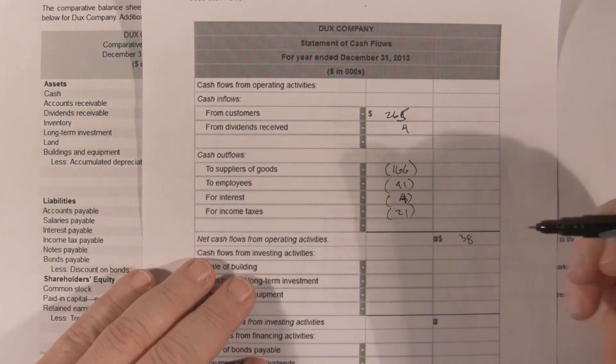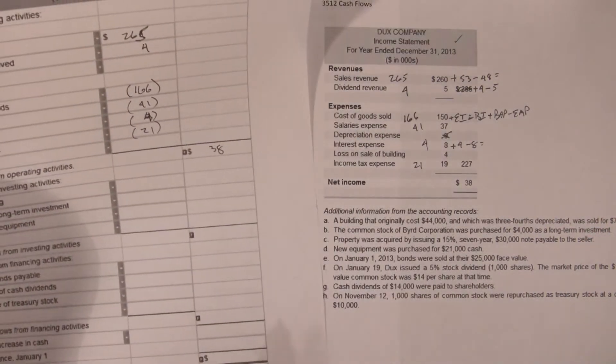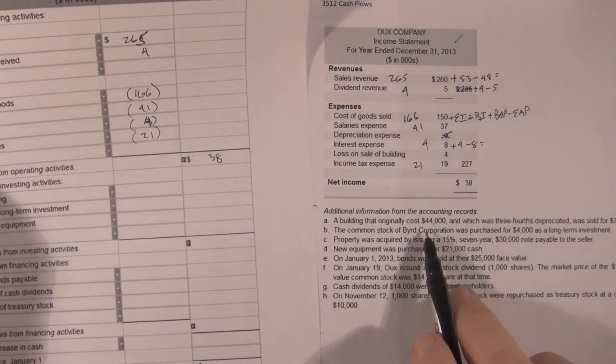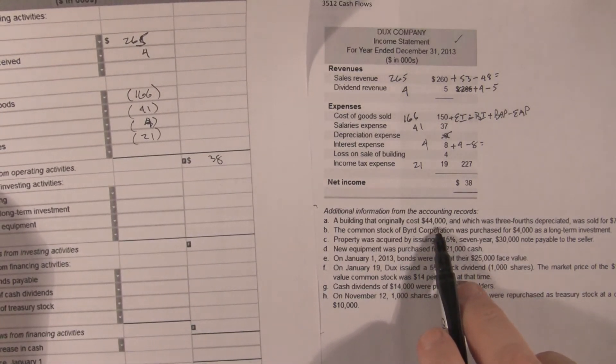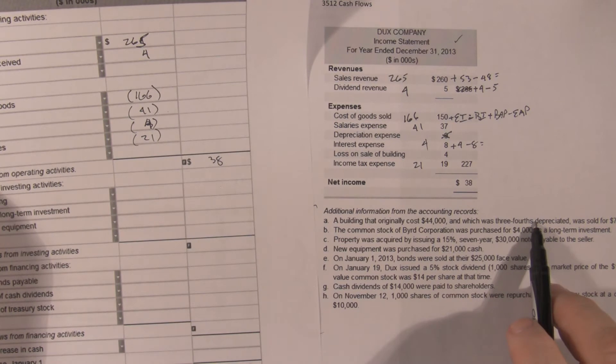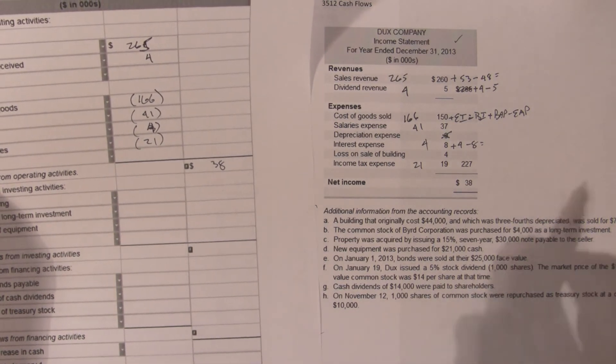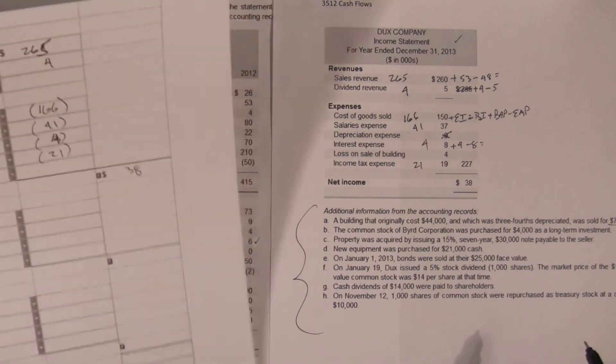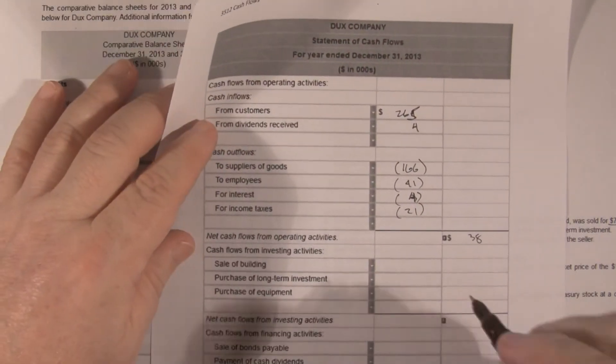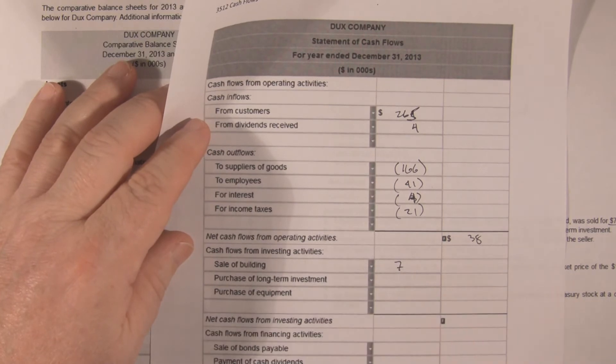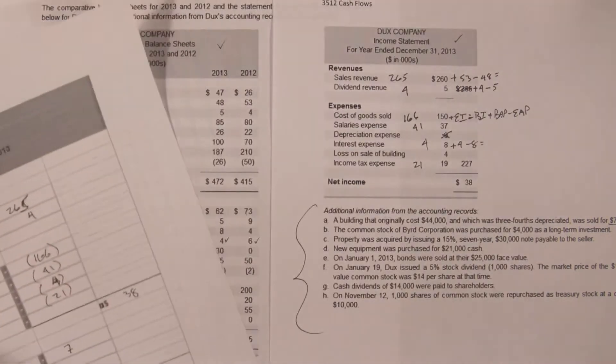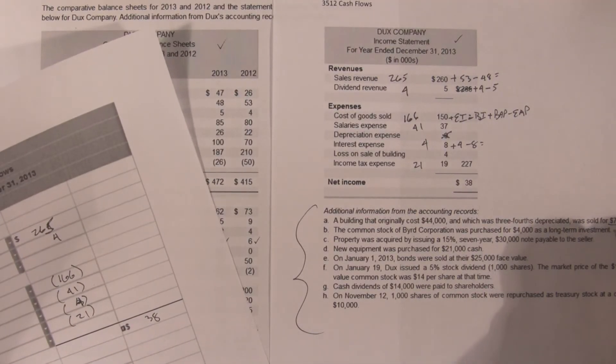Now let's go take a look at the supplementary information. A building that originally cost 44,000 was three-fourths depreciated, and I know you all wanted to go off and do three-fourths of 44,000. $7,000, that's what we care about. Sale of building, we got 7,000.